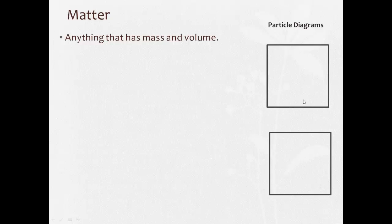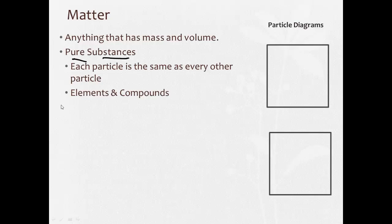Matter is going to be divided up into two main categories. The first one is what's called pure substances. The definition of a pure substance is that each particle is the same as every other particle in the substance. There's a couple of kinds of pure substances. Both kinds of pure substances are elements and compounds.